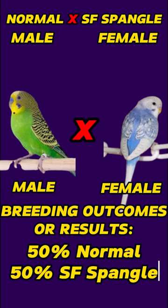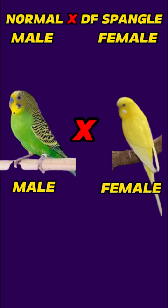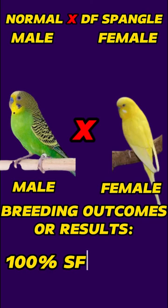Second pairing: the male is a normal budgie and the female is a double-factor spangle budgie. The breeding outcomes or results are 100% chicks are single-factor spangle budgies.